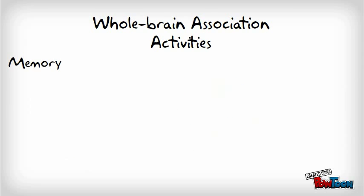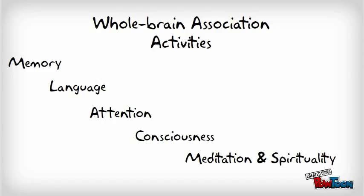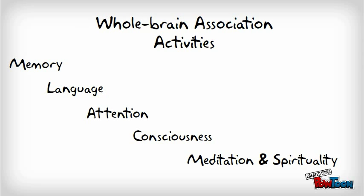Memory, language, attention, consciousness, and meditating and spirituality are whole brain association activities that require communication among association areas across the brain. Association areas are found in all four lobes.